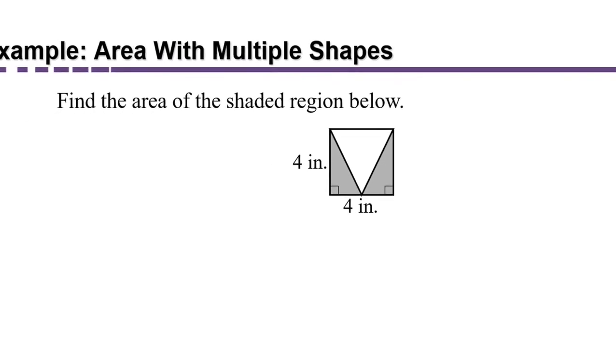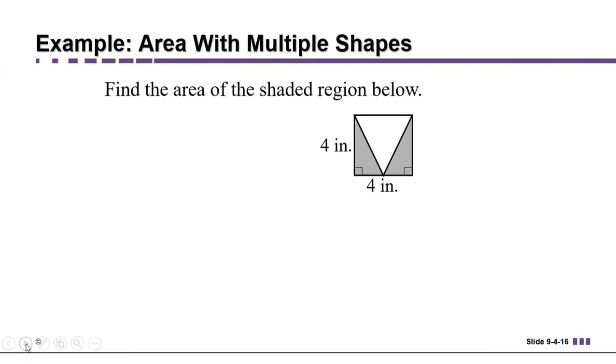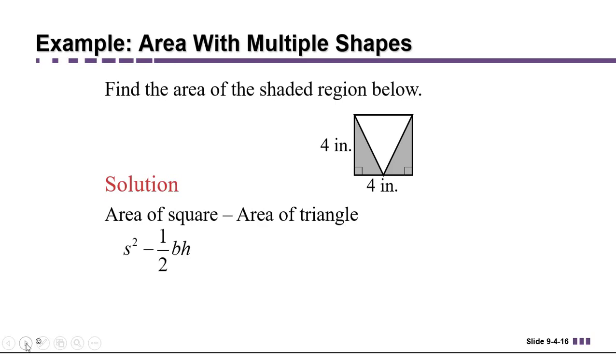So the way that we're going to approach this problem is, although I don't know the dimensions of the little gray triangles because we weren't told, we can figure out the base and the height of the white triangle. So we're going to take the area of the square and subtract from it the area we don't want, the white triangle. The area of the square is given by s squared. The area of a triangle is one-half base times height. We know that the sides of the square are length 4, so we know s. And now we just have to figure out the base and the height of the triangle.